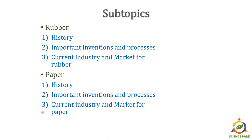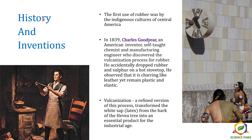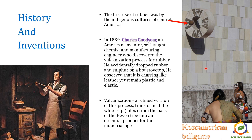Let's start with history and some important inventions in the area of rubber. The first documented use of rubber was by the indigenous cultures of Central America long back. They used to make rubber balls out of the Hevea tree and play a game known as the Mesoamerican ball game — looks similar to our basketball game. Then in 1839, Charles Goodyear, an American inventor and self-taught chemist and manufacturing engineer, discovered the vulcanization process for rubber.